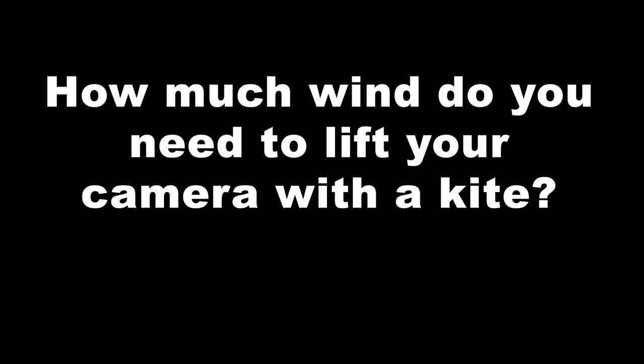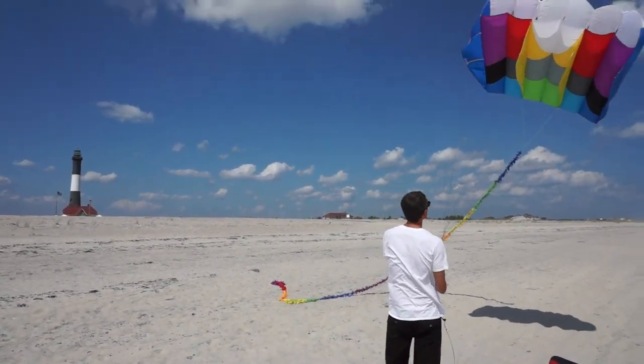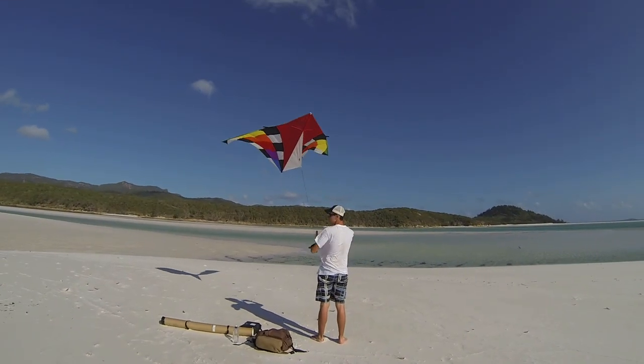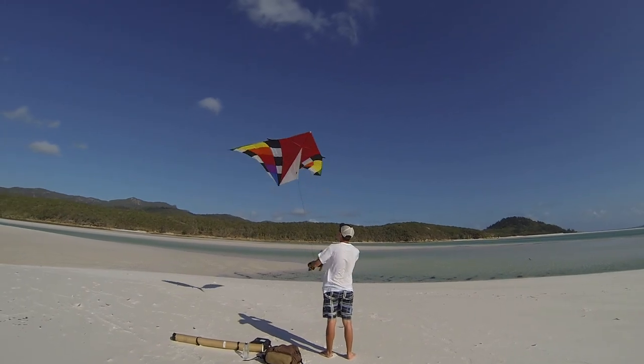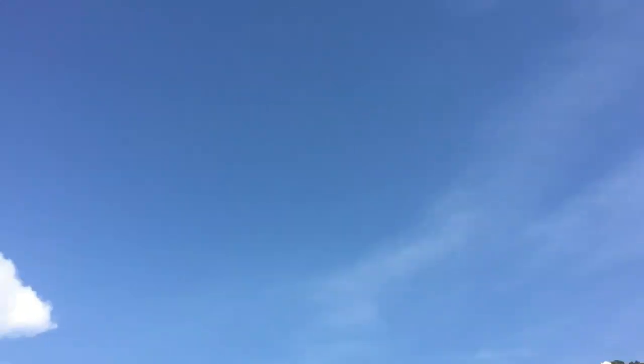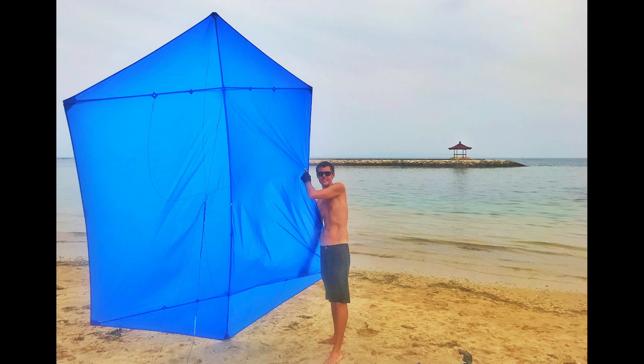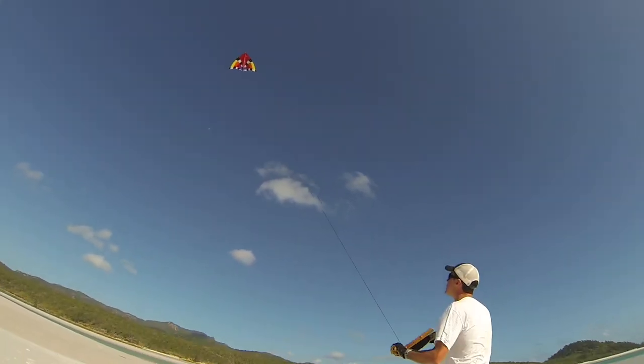How much wind do I need to get a kite to lift my camera up into the air? Well, I have a wide variety of kites that range in size and shape. Each kite is meant to be used in a different range of wind speeds. I have kites that will lift my camera in winds as low as 4 or 5 miles an hour, all the way up through 35 miles an hour plus. A basic rule of thumb for choosing a kite: the bigger the kite, the less wind it needs to fly. So if the wind is really gentle, I'll use a bigger kite. As the wind speed increases, I'll use smaller and smaller kites.